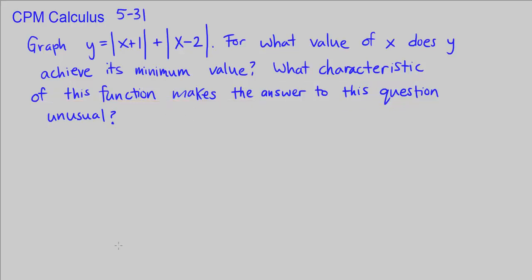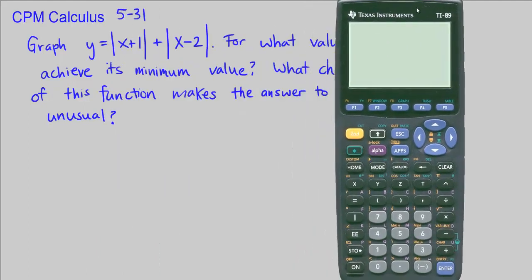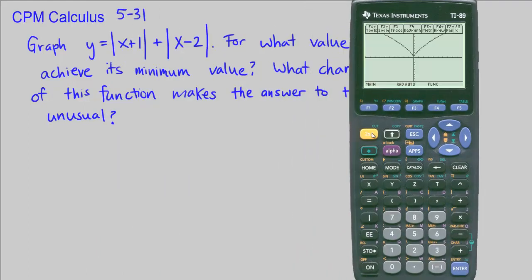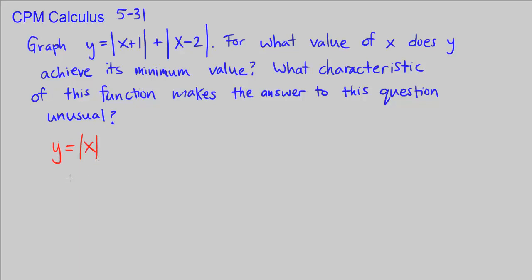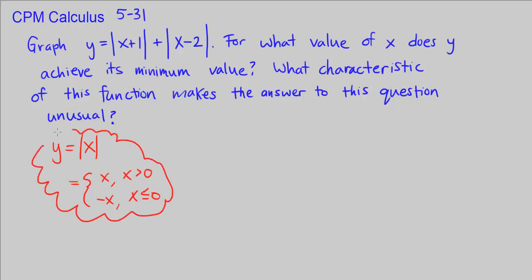Our calculator will allow us to graph this immediately, but instead of just jumping in and graphing it, I want to first figure out what it is algebraically. Functions that have absolute values can be broken up into piecewise defined functions. For example, y equals the absolute value of x means it equals x when x is greater than 0, and negative x when x is less than or equal to 0.